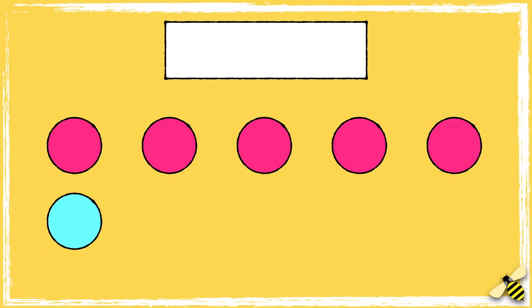Let's look at one more example. Here are some more counters. There are five pink counters and one blue counter.